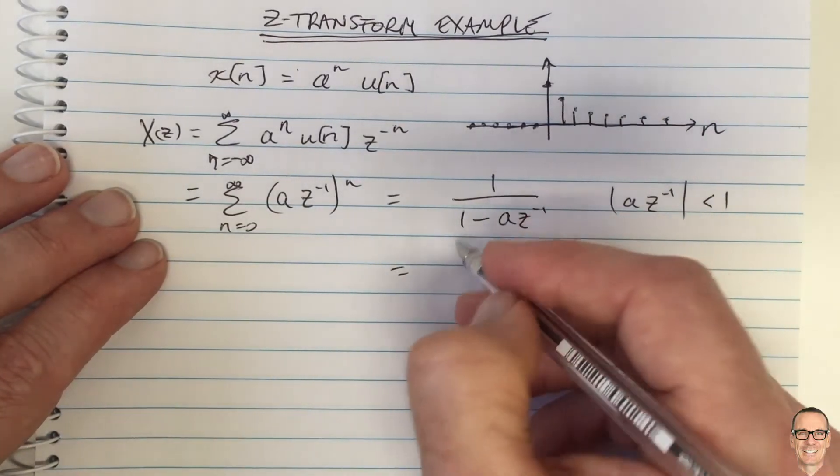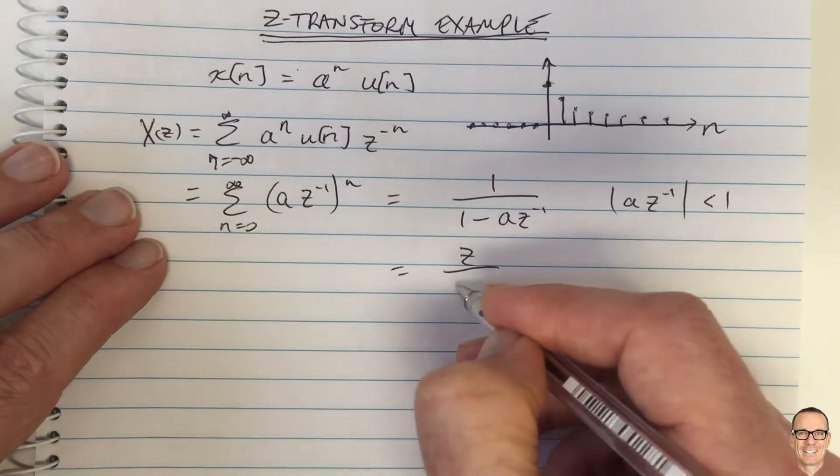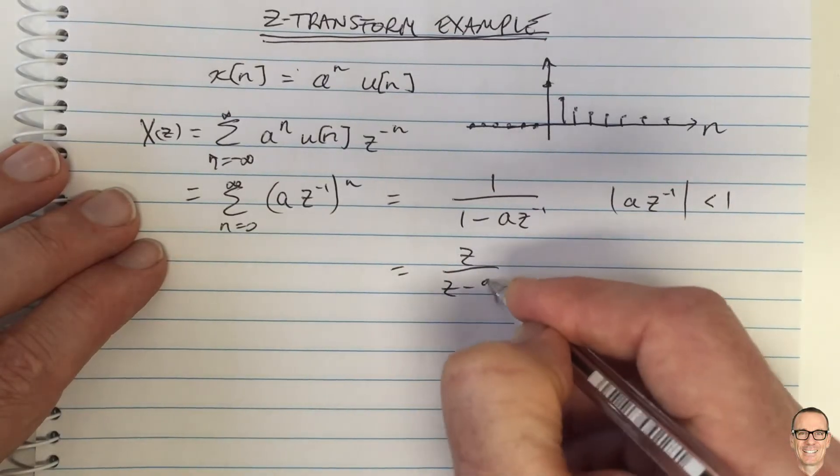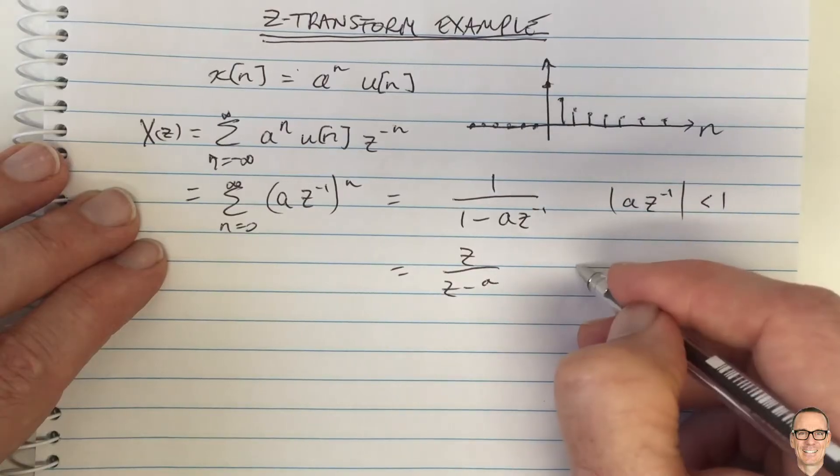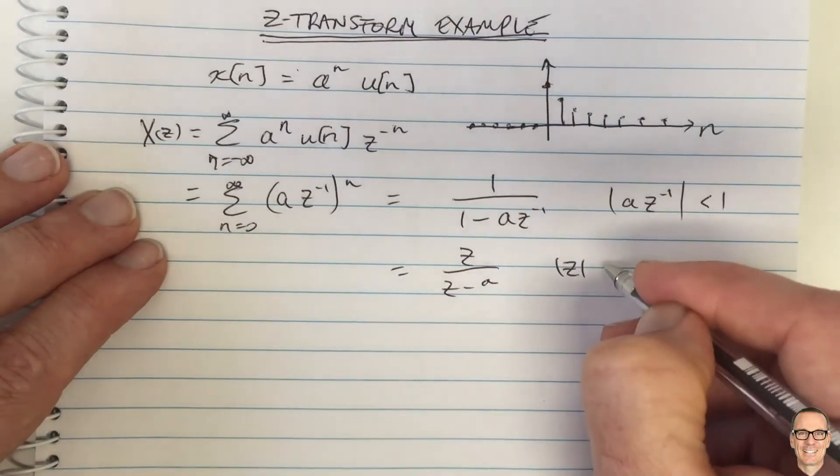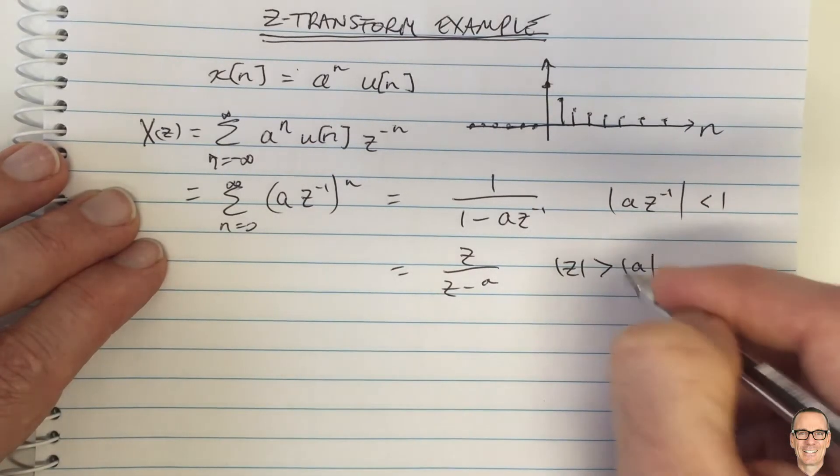OK, so we can multiply top and bottom by Z, so we have Z over Z minus A. And we rearrange this, we can see that the mod of Z has to be bigger than the mod of a.